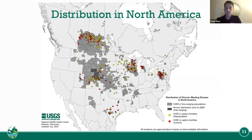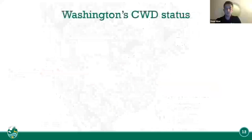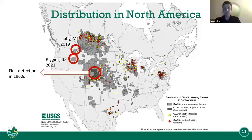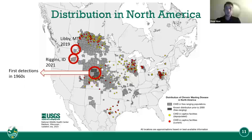For distribution in North America: currently it's in approximately 31 states — Florida was added this year. It was first detected in the 1960s in Wyoming and Colorado, and was later spread throughout much of the United States.